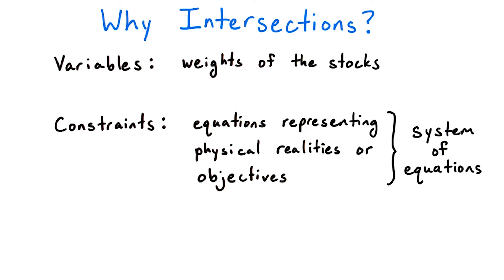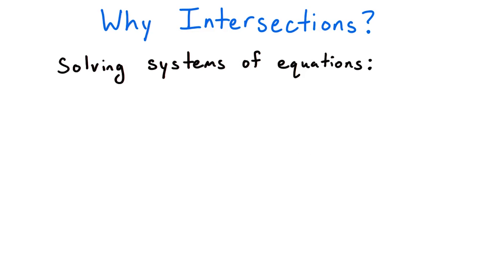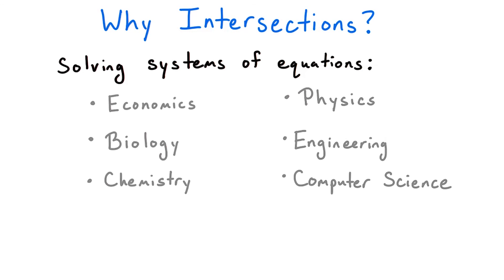Finding points that satisfy all the equations at the same time is called solving the system. In practice, this is how problems involving the intersections of geometric objects come about. These types of problems show up in fields as diverse as economics, biology, chemistry, physics, engineering, and of course, computer science. In this lesson, we will use our tools from the first lesson on vector operations to solve this ubiquitous problem of finding intersections.